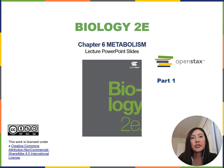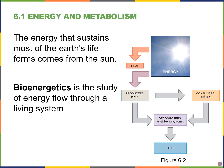Hi everyone, and welcome to chapter 6. In this chapter we'll be talking about energy metabolism and enzymes. Most of the energy that keeps all organisms alive really starts with the Sun. Producers like plants can capture the energy from the Sun through a process called photosynthesis, and we'll talk about that more later on, but some of that energy is lost in the form of heat.